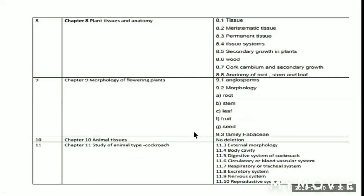Chapter 8, Plant Tissue and Anatomy: 8.1 Tissue, 8.2 Meristematic Tissue, 8.3 Permanent Tissue, 8.4 Tissue Systems, 8.5 Secondary Growth in Plants, 8.6 Wood, 8.7 Cork, Cambium and Secondary Growth, and 8.4 Anatomy of Roots.